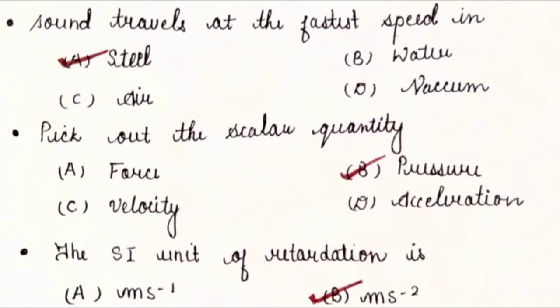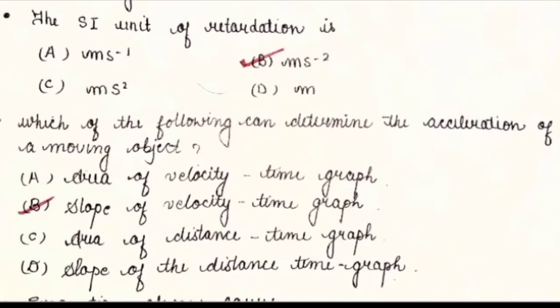Now the next question: the SI unit of retardation is? Retardation is also known as deceleration. Options: A) meter per second, B) meter per second square, C) meter second square, D) meter. And the answer is meter per second square, same as the SI unit of acceleration.